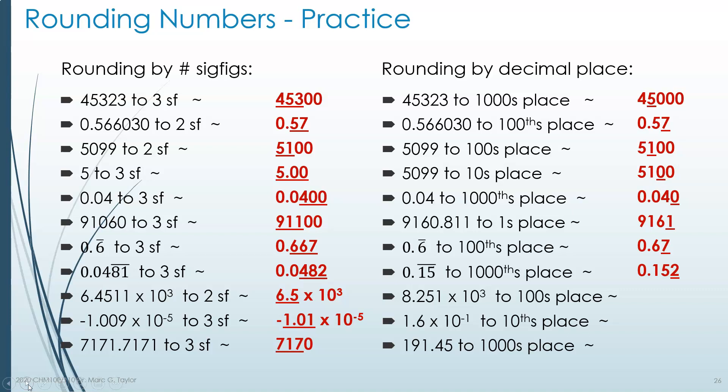8.251 × 10³ to the hundredths place. We rewrite in decimal form: 8.251 × 10³ = 8,251. The hundredths place is occupied by the 2. Since the 5 after it is high, the 2 rounds up to 3, giving 8,300 — or in scientific notation, 8.3 × 10³. We do not add zeros after the 3 because those are not significant when rounding to the hundredths place.